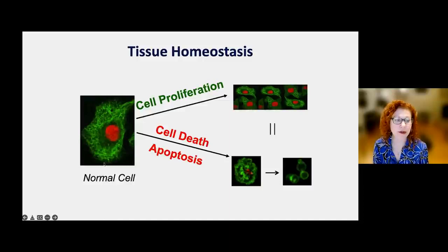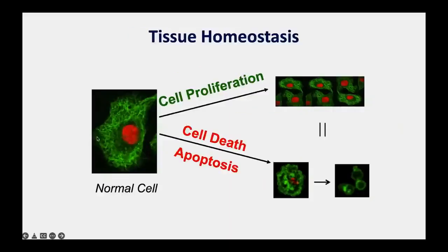Here is a picture of a cell—a fibroblast viewed through fluorescent microscopy. The green shows microtubules in the cytoskeleton within the cytoplasm of the cell, and the red shows the DNA in the nucleus of the cell.